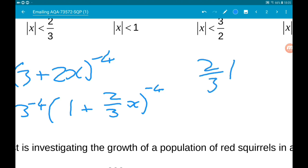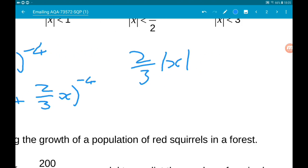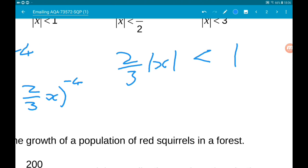Now if we multiply through by 3, 2 times modulus of x is less than 3.